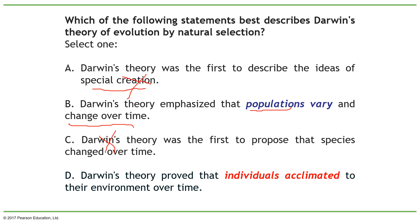Now option D: Darwin's theory proved that individuals acclimate to their environments over time. Something both B and D have in common is the phrase 'over time,' which is important for Darwin. But there are three problems here. Darwin's relationship with the environment is a bit controversial. 'Acclimated' doesn't seem right — acclimation is just a change that adjusts within one generation. Also, Darwin is not talking about individuals; he's talking about changes in the population that lead to long-term, very gradual changes.